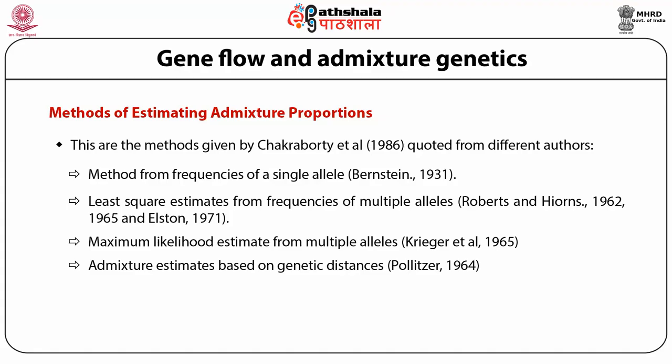Another method is admixture estimate based on genetic distance. Paulzer was the first to derive estimates of admixture proportion based on genetic distance between the hybrid and parental populations. He noted that the contribution of the parental stock to the hybrid population should be inversely proportional to the squares of the distance of the parents from the hybrid. While intuitively it is clear that with increasing gene flow genetic distance should decrease, the exact relationship need not be an inverse function, particularly with the choice of distance measure.